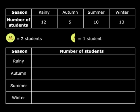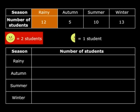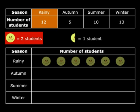Here is our table. Rainy season — there are 12 students. So how many such pictures do we need? Each picture represents two students, so we need six such smileys.